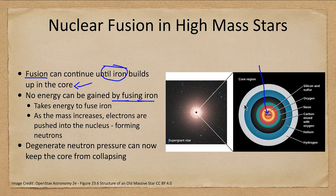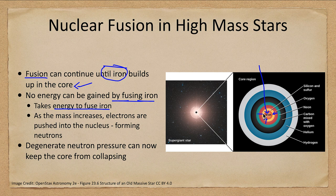Once you build up that iron, you're done, because it takes energy to fuse iron. The core continues to compress, and we have material raining down on the core from fusion in the shells above it. So that iron core gets more and more massive and more compressed.